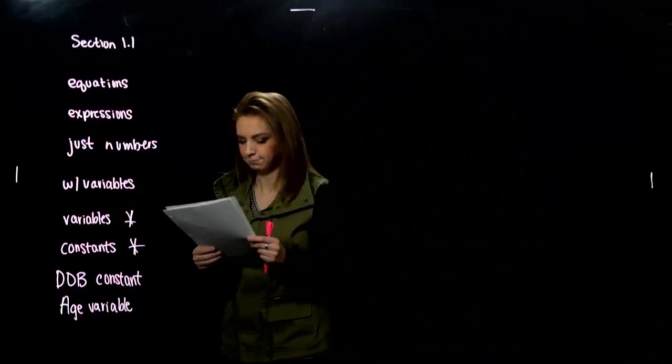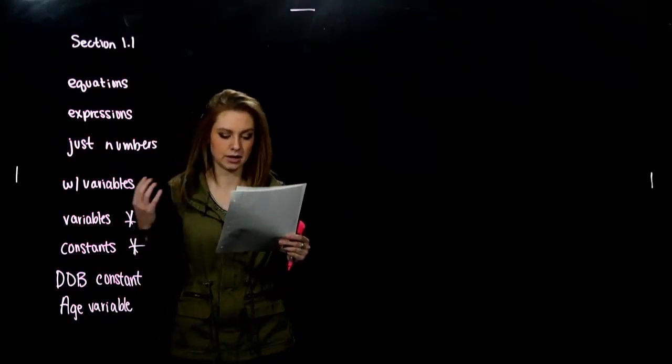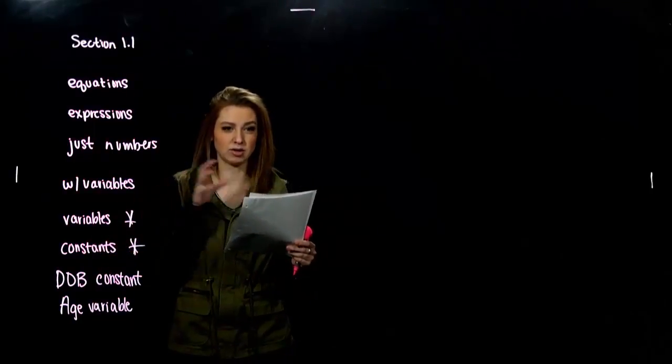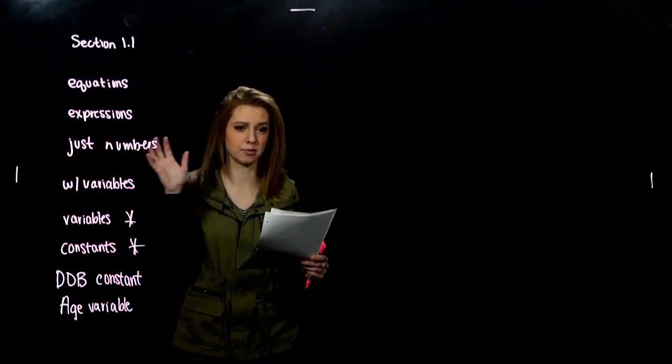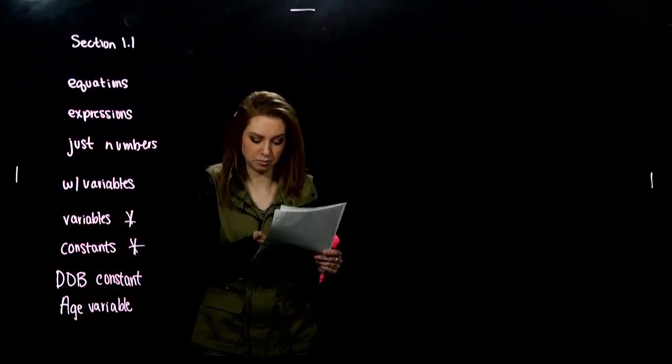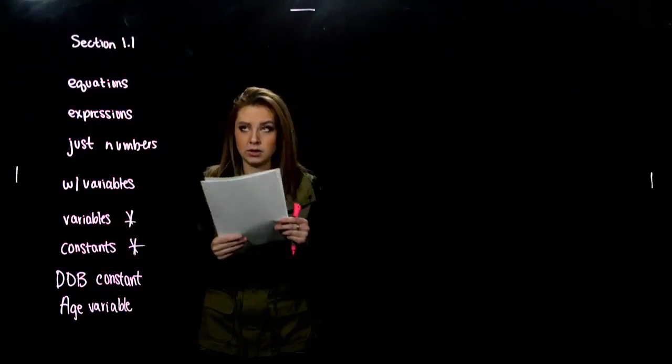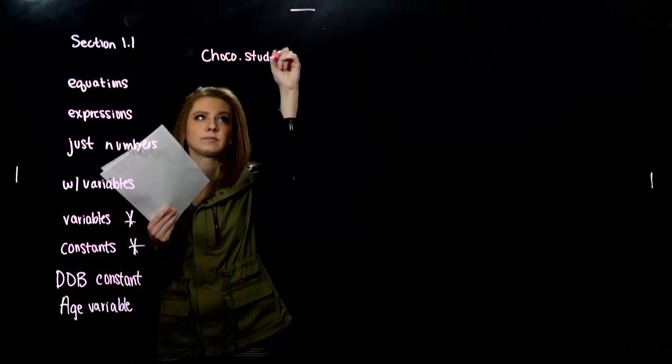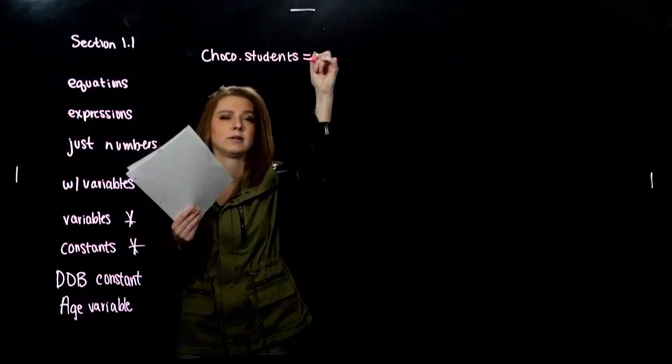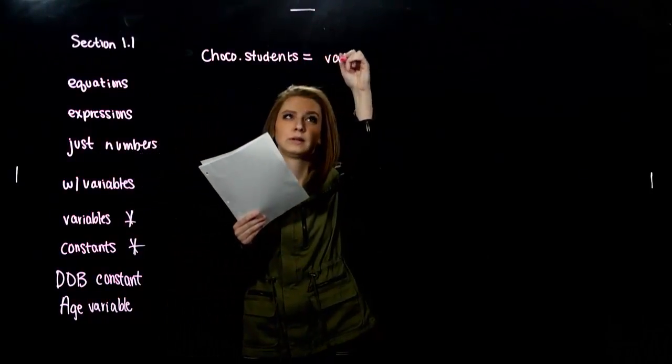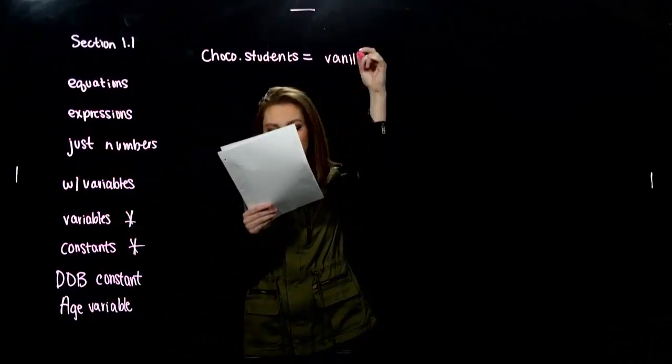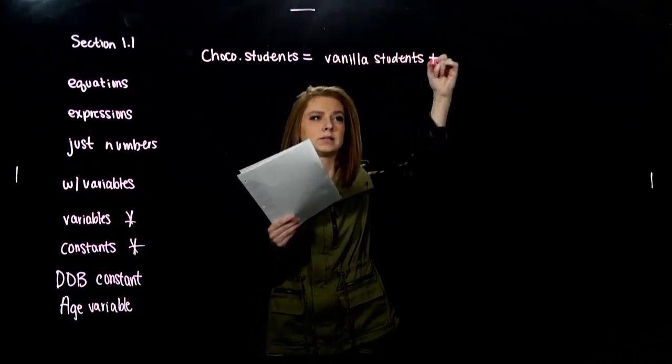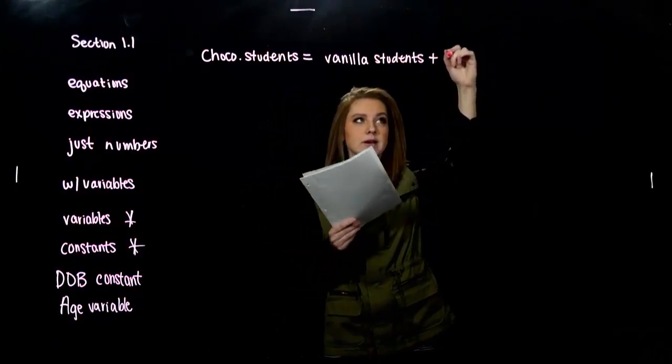So what are we asking? The chocolate students like ice cream, chocolate ice cream, more than the vanilla. So the vanilla plus some little amount is going to give me the number of chocolate students. We can obviously see more students like chocolate than vanilla. So I'm thinking the chocolate students are the vanilla, however many like vanilla, plus a little bit more, a few other students. How much more?